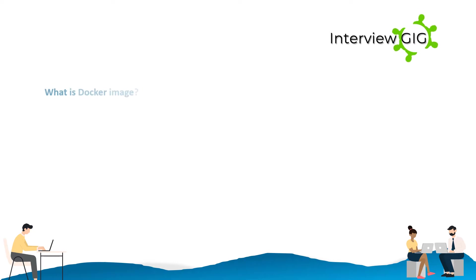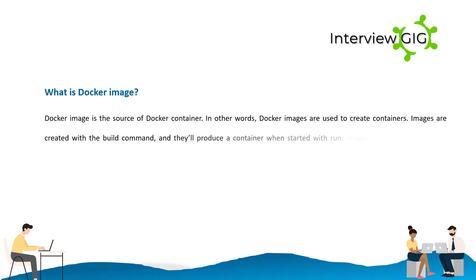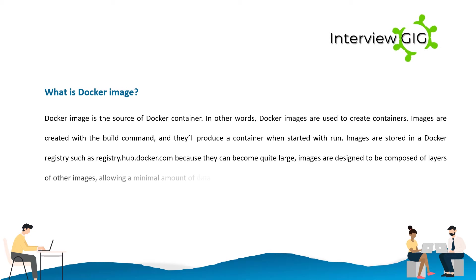What is a Docker Image? Docker Image is the source of a Docker container. Docker images are used to create containers. Images are created with a build command, and they produce a container when started with run. Images are stored in a Docker registry such as registry.hub.docker.com. Images are designed to be composed of layers of other images, allowing a minimal amount of data to be sent when transferring images over the network.